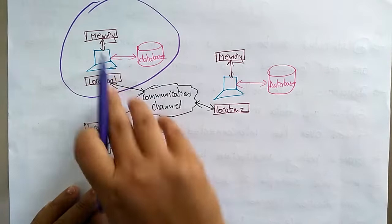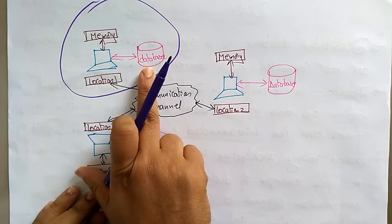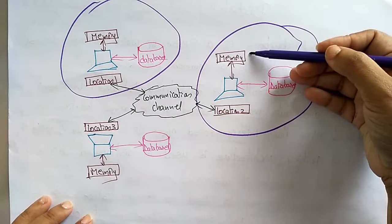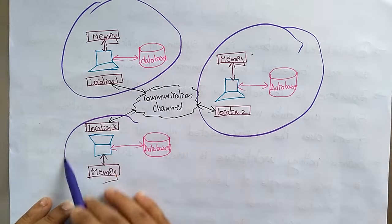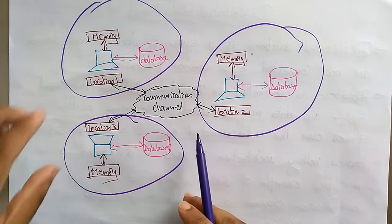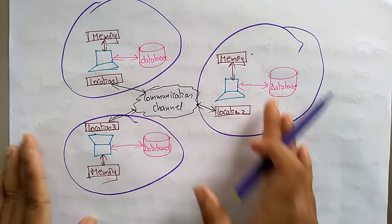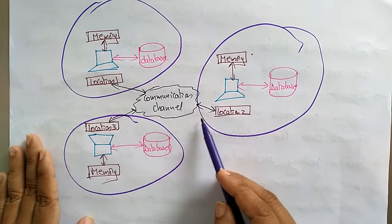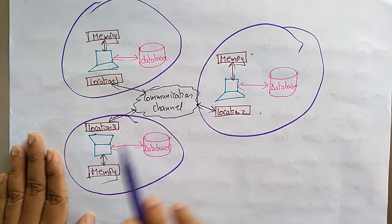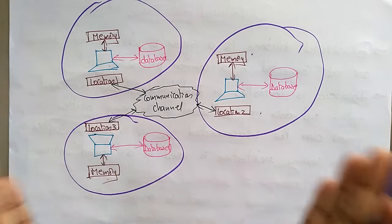Here you can see one system present at location one, having its own memory and database. Another system is present at a different location, also with its own memory and database. A third system is at yet another location with its own memory and database. All systems communicate through this communication channel, so each database can be accessed by the others. This is the distributed database environment.